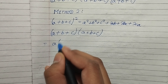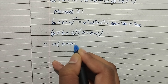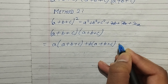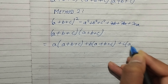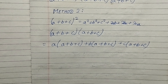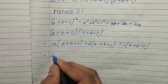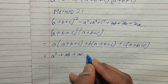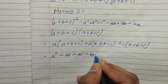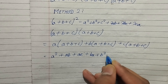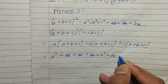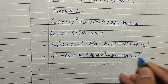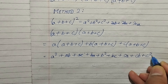So we get: a × (a + b + c), plus b × (a + b + c), plus c × (a + b + c). Expanding: a·a = a², a·b = ab, a·c = ac; then b·a = ba, b·b = b², b·c = bc; then c·a = ca, c·b = cb, c·c = c².